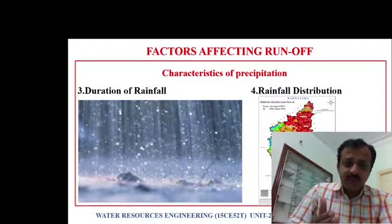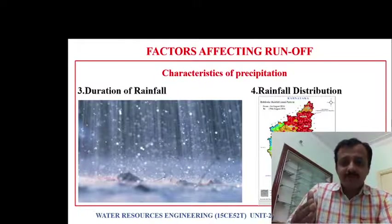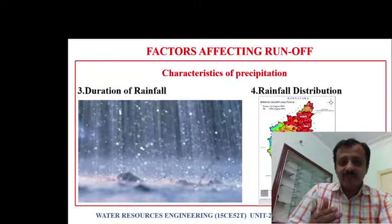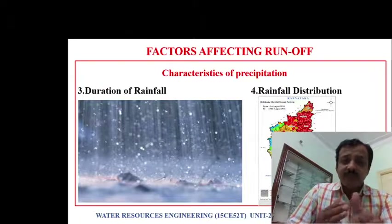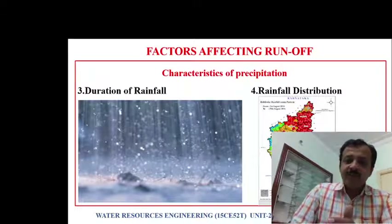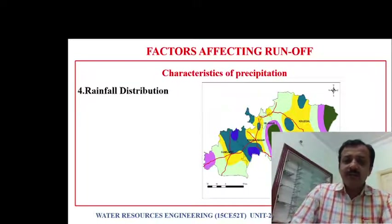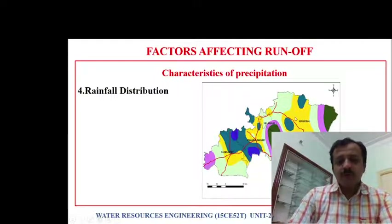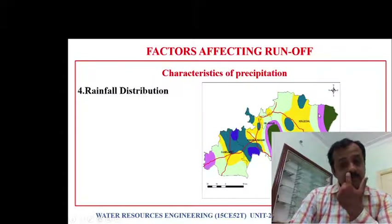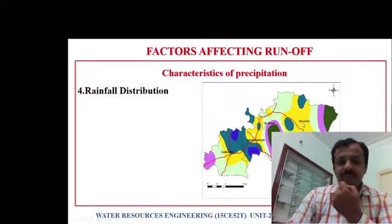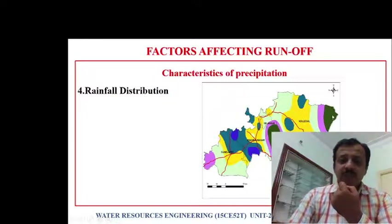If the duration of rainfall is more, more will be the runoff. Another characteristic of precipitation affecting runoff is rainfall distribution — how the rainfall is distributed across the area. Rainfall is not uniform throughout the area. If rainfall intensity is more near the stream, then more will be the peak discharge in that stream.